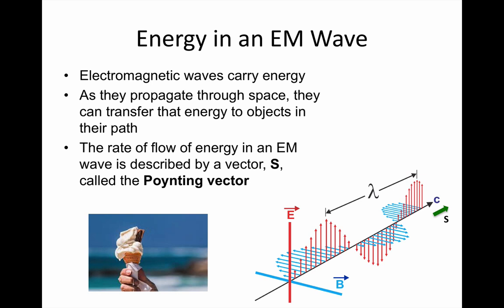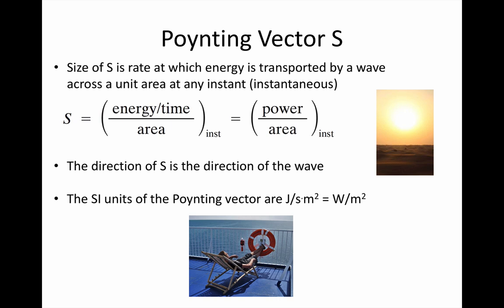The rate of energy transfer per unit area is called the Poynting vector that we show with a capital S. The magnitude of the Poynting vector is the rate at which energy is transported divided by the area. And we know that rate of energy transfer is power.